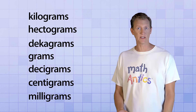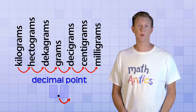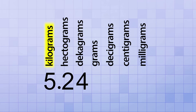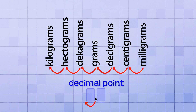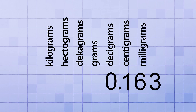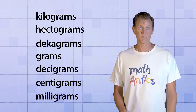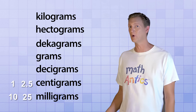Again, because these units of mass are based on powers of 10, you can convert between them just by shifting the decimal point. You can convert to the next smaller metric unit by shifting the decimal point to the right, which is equivalent to multiplying by 10. 5.24 kilograms is the same as 52.4 hectograms, which is the same as 524 decagrams, which is the same as 5,240 grams, and so on. And you can convert to the next bigger metric unit by shifting the decimal point to the left, which is equivalent to dividing by 10. 16.3 milligrams is the same as 1.63 centigrams, which is the same as 0.163 decigrams, which is the same as 0.0163 grams, and so on. But as was the case with units of length, many of these units of mass are not used as often. For example, centigrams aren't as popular, because people will usually just say 10 milligrams or 25 milligrams instead of 1 centigram or 2.5 centigrams.